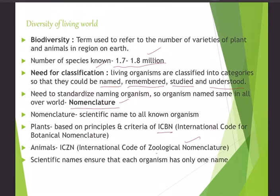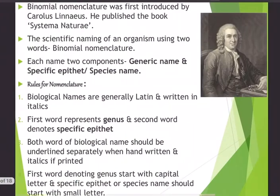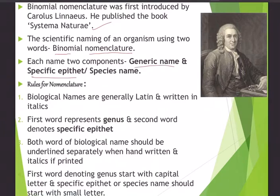Binomial nomenclature was first introduced by Carolinus (Carolus Linnaeus), who published the book 'Systema Naturae'. The scientific way of naming an organism using two words is binomial nomenclature. Each name has two components: a generic name and a specific name. Biological names are generally in Latin, written in italics when printed. The first word represents the genus, the second the specific epithet.